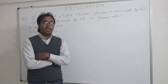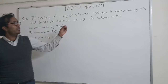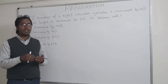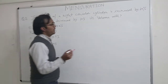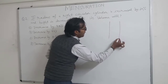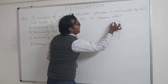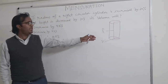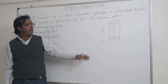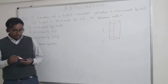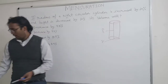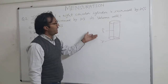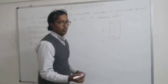So how will we solve this problem? This problem is about one cylinder in two different cases. In the first case, the cylinder has radius R and height H. In the second case, according to the question, the radius is increased by 10% and the height is decreased by 10%.